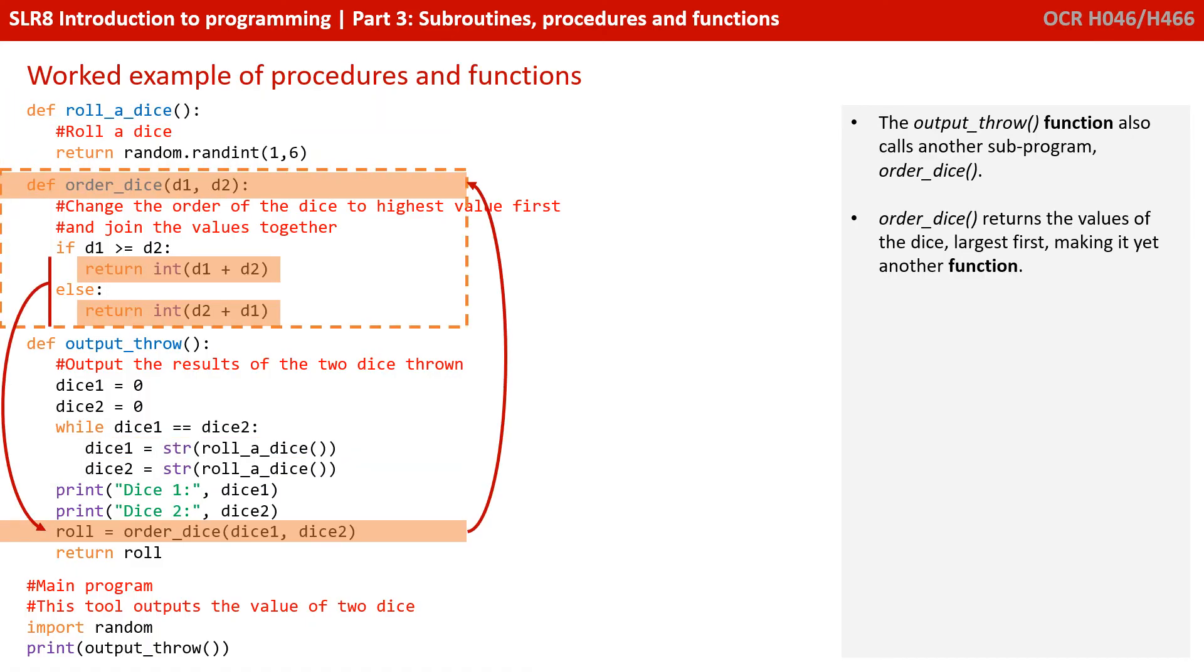Again, a little bit further in the output throw function, we see another call to a subroutine, this one called OrderDice. So as soon as we hit that line of code, the program jumps off to the OrderDice subroutine and starts executing the code in there. Again, depending on the result of the if statement, if D1 is greater than or equal to D2, we hit one of two return statements. One of the other is going to get executed, and when we do that, we'll jump back into the output throw function. And of course, once again, because OrderDice returns a value, this is a function and not a procedure.